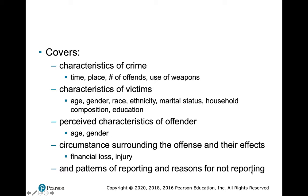The NCVS covers characteristics of the crime — time, place, number of offenders, and use of weapons — victim characteristics such as age, gender, race, ethnicity, marital status, household composition, and education — perceived characteristics of the offender, circumstances around the offense, financial loss, injury, and patterns of reporting and reasons for not reporting.